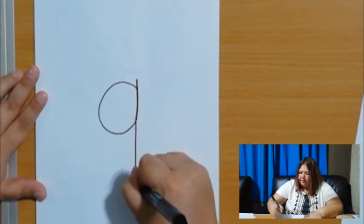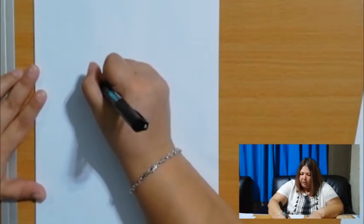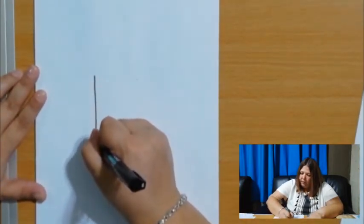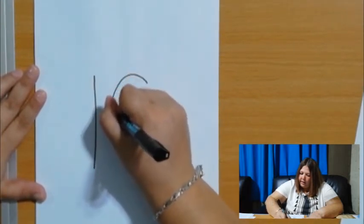Number 9, you start with your loopy, close the loopy, make a little arm at the top and make a leggy. Nine. Number 10, it's first the straight line down and then the zero.